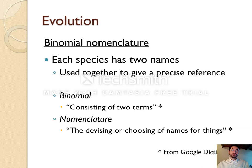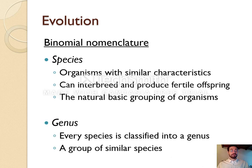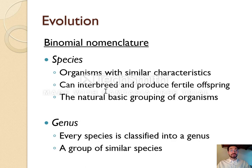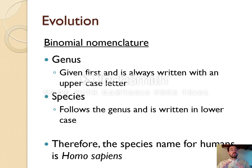The two names given to all organisms are their species name and their genus name. A species is essentially the smallest truly recognized biological grouping, defined as a group of organisms with similar characteristics that are capable of successfully breeding to produce fertile offspring. In taxonomy, a species is the smallest group. All species are part of a genus — a group of similar species — where the genus name is always written first with a capital letter, and the species name follows in lowercase.